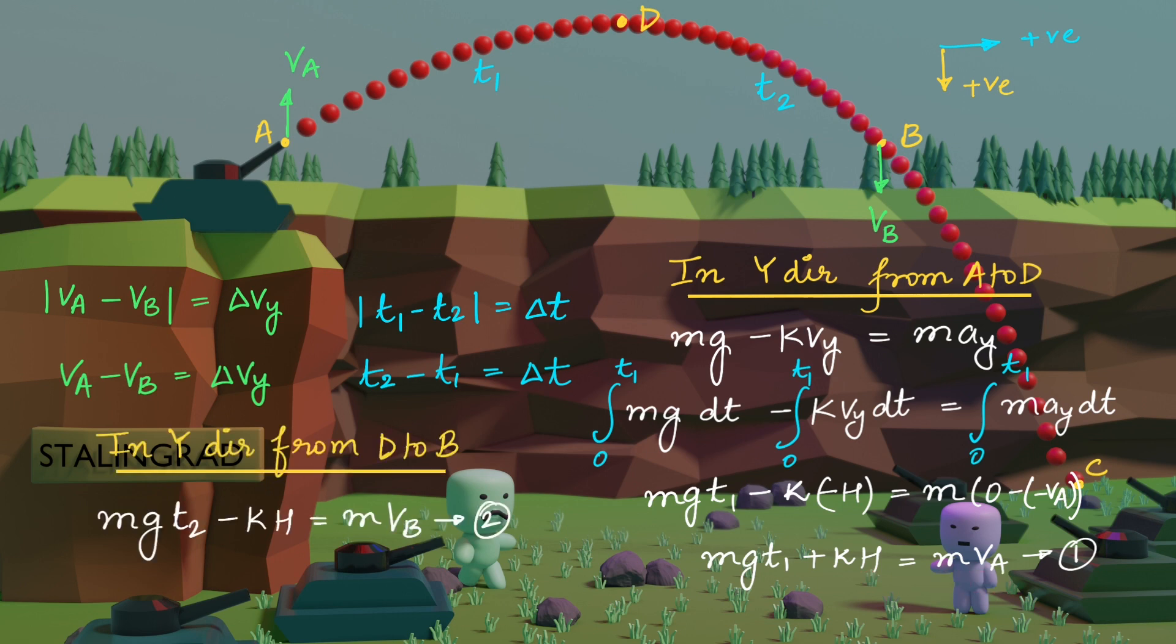Now similarly, when we write the equation in y direction from D to B, so from D to B if we write this similar equation, we get Mg T2 minus Kh equals M into Vb.